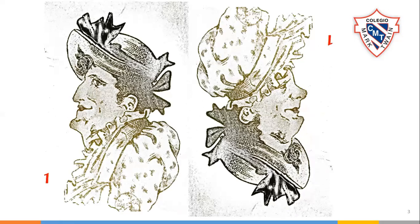Si nosotros volteamos a la mujer, tendría otra perspectiva. Si se dan cuenta, del lado izquierdo es la dama y del lado derecho es la sirvienta, que es ama de llaves o persona que nos ayuda en la parte doméstica. Tiene dos tipos de sombrero distinto. La que está del lado izquierdo es la dama y la que está del otro lado lleva una especie de florina, un gorrito para cocina que en el siglo XIX así se utilizaba. Esta ilusión óptica permite que tengamos distintas percepciones.